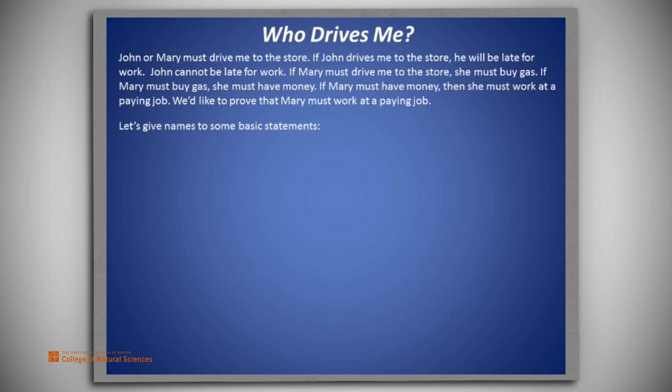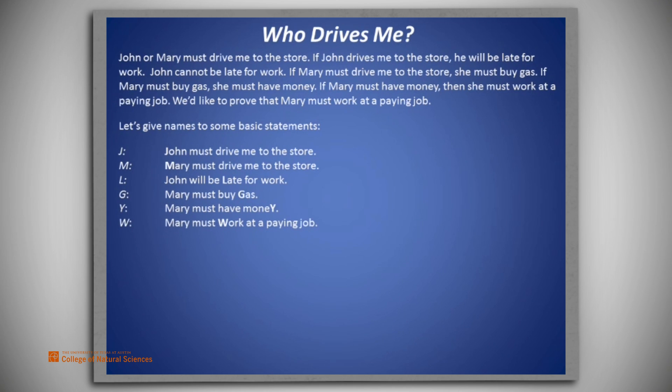We begin by assigning names to some basic statements. J represents John must drive me to the store. M represents Mary must drive me to the store. L represents John will be late for work. G represents Mary must buy gas. Y represents Mary must have money. And W represents Mary must work at a paying job.